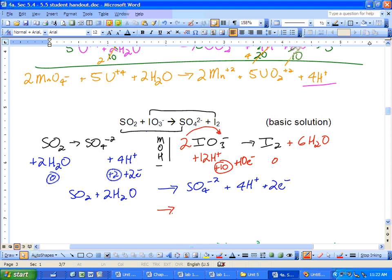Write it out, nice and centered. I2, 6 H2O, nice and centered, goes to 2 IO3-, 12 of those, and 10 electrons.